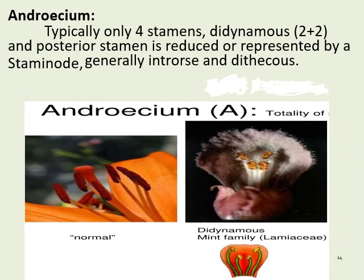The third whorl of the flower is the androecium, which contains stamens. The number of stamens in this family is four, arranged as two short and two long — all present in a single whorl (didynamous). In Salvia, only two stamens on the anterior side are found, characterized by peculiarly long connectives which help in insect pollination. These stamens are two-lobed structures present at the anterior end.